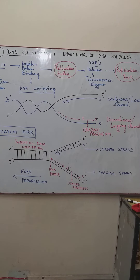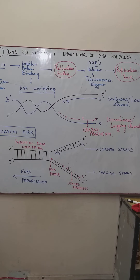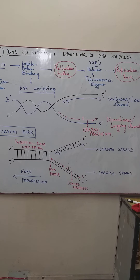This unwinding results in the formation of a replication bubble. The replication bubble is an area where the ORI site is present, and it breaks the hydrogen bonds. As a result, the replication bubble is formed.